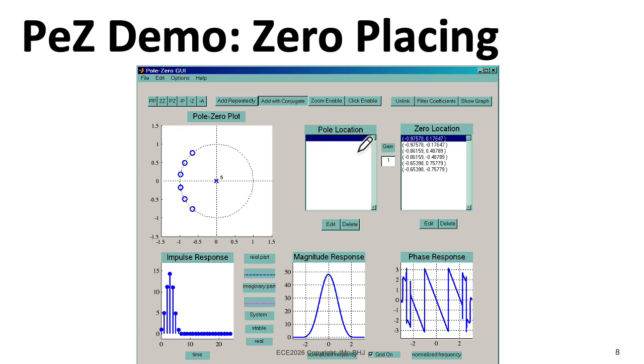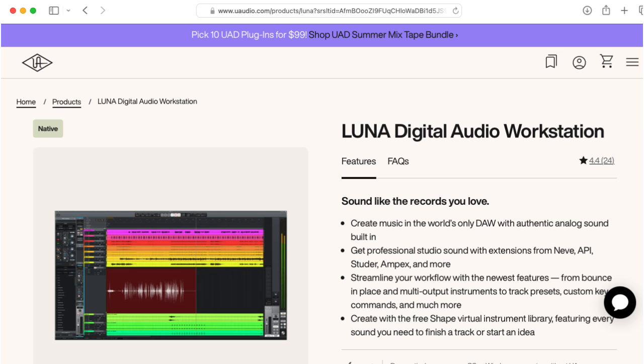You can enter the locations of zeros and poles, drag them around, and look at the effect on the frequency response and the impulse response.